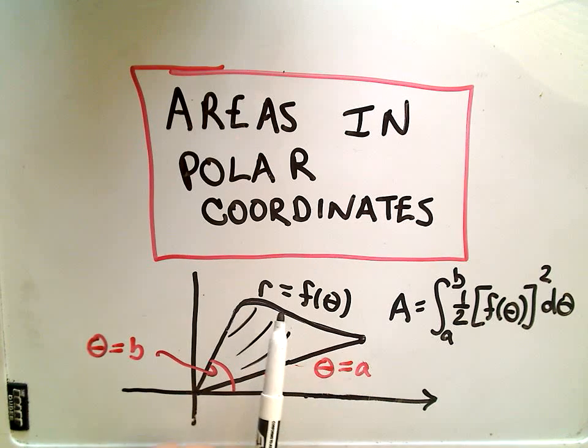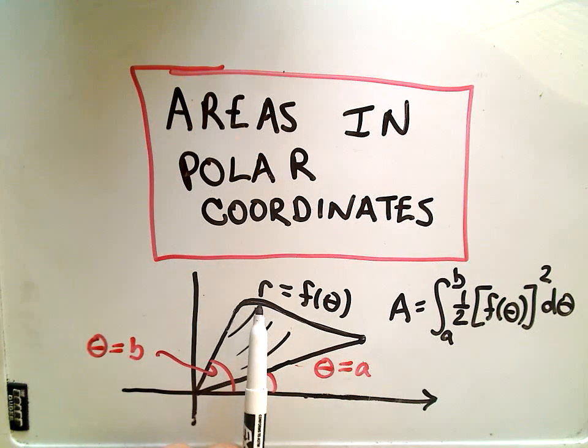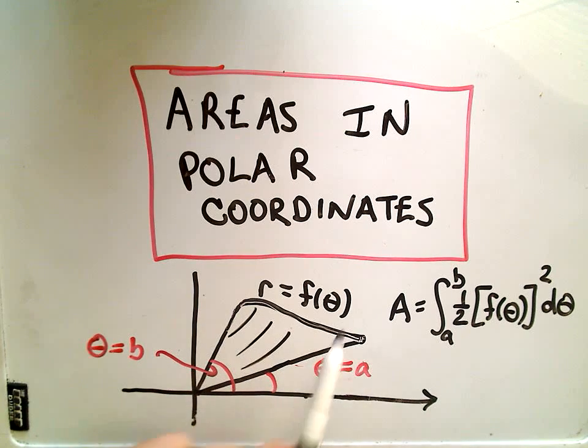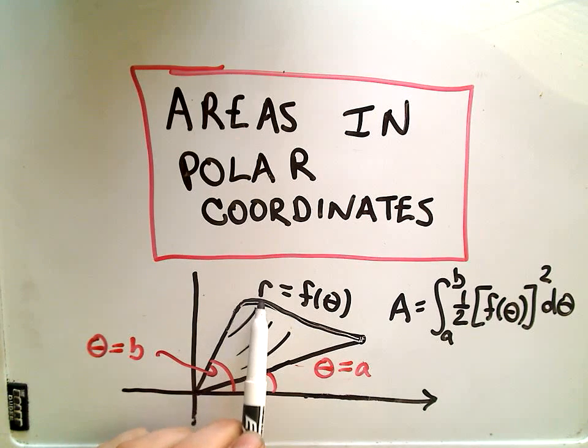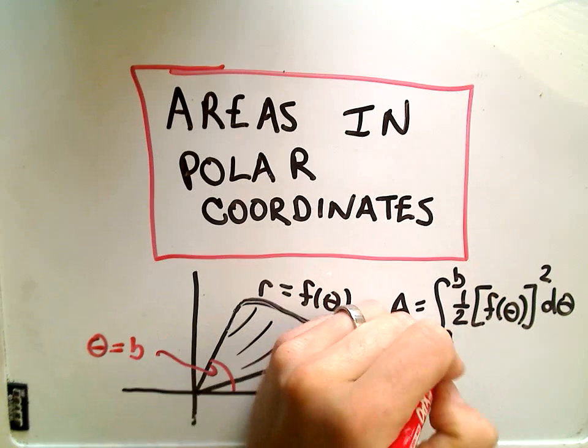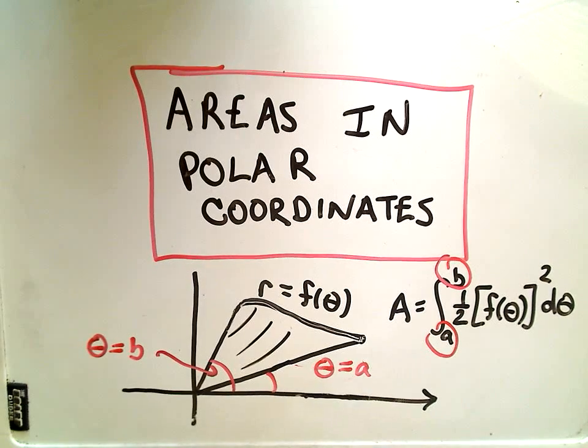Remember things in polar coordinates, the graphs are a little different. Suppose this is my graph, r equals f of theta, where theta is our angle and r is the radius or the distance you go out from the origin. The thing that you integrate is pretty easy. You just take one half of the function squared. The parts that are usually a little more complicated are finding the limits of integration.